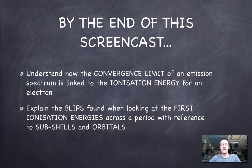So hopefully by the end of this film you'll know what something called the convergence limit is, where you'd find it in an emission spectrum, and how we can link it to the ionization energy of an electron in an atom. And we're also going to try and explain something that we've touched on in the past, and that is these blips that we see when we look at the first ionization energies of atoms in a period. And we're going to try and do that with particular reference to the subshells and orbitals that we've been looking at up until now.